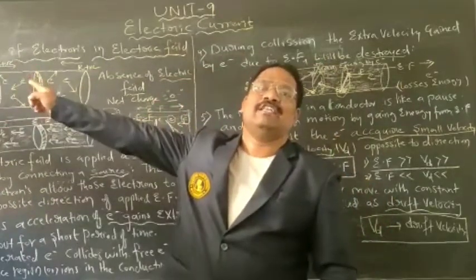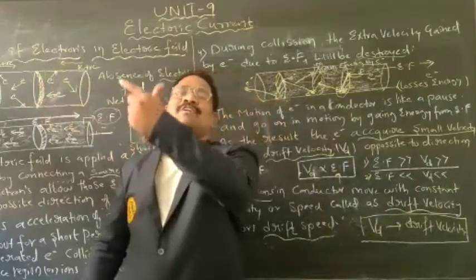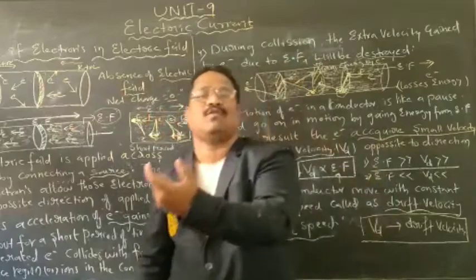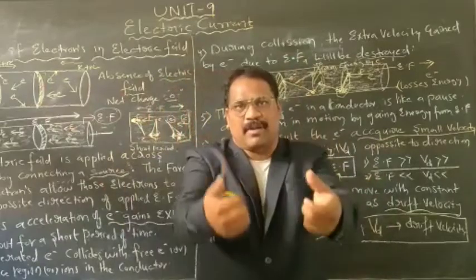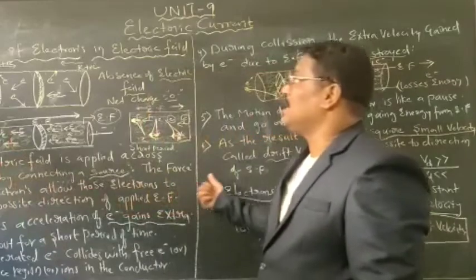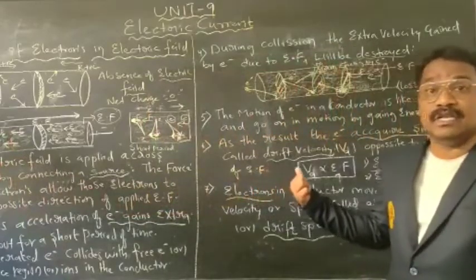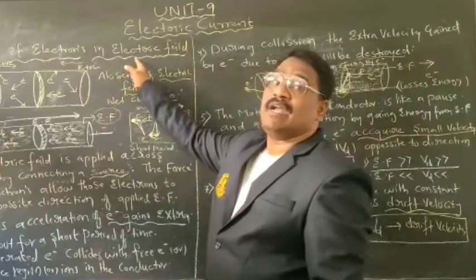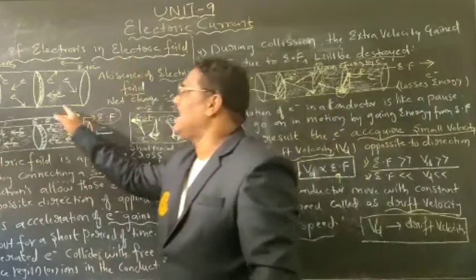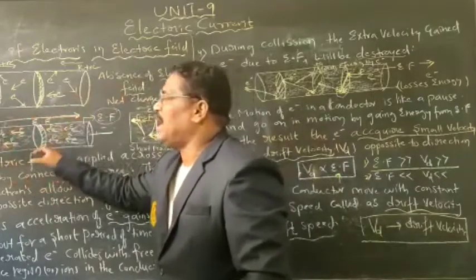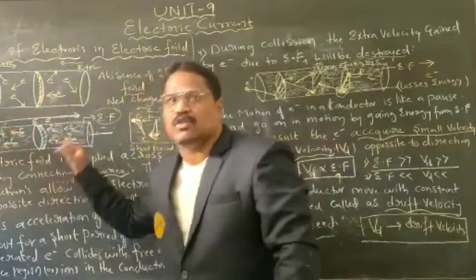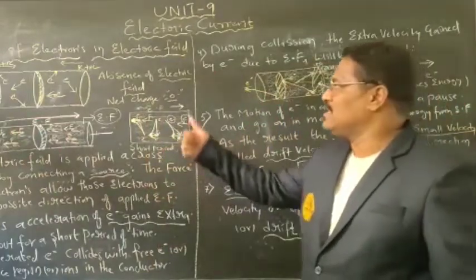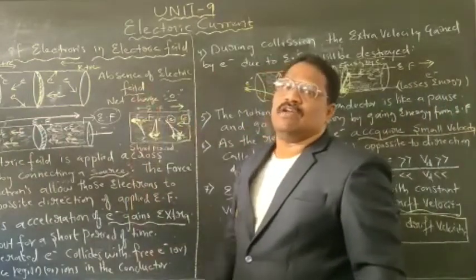Therefore the electric field plays a role in producing drift velocity. Due to this, all the electrons move in an orderly manner from one point to another, from high potential to low potential, which results in producing electric current. Electric current I = Q/T, where charge is measured in coulombs and time in seconds — coulombs per second gives the current. By this we have completed the concept of behavior of electrons in an electric field.